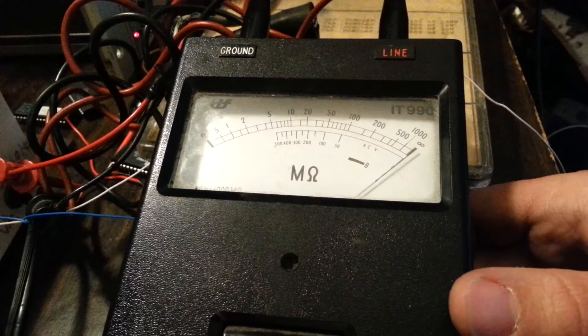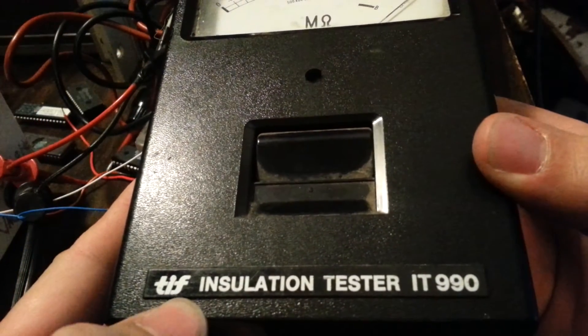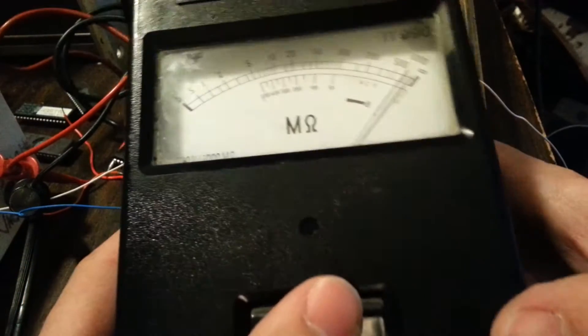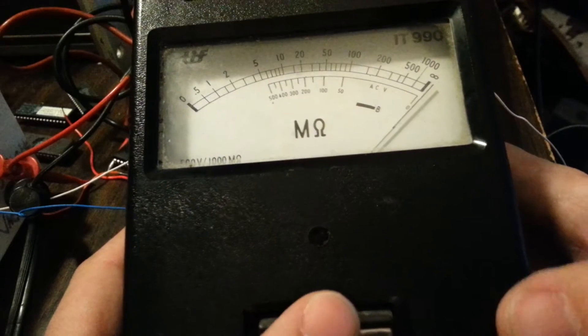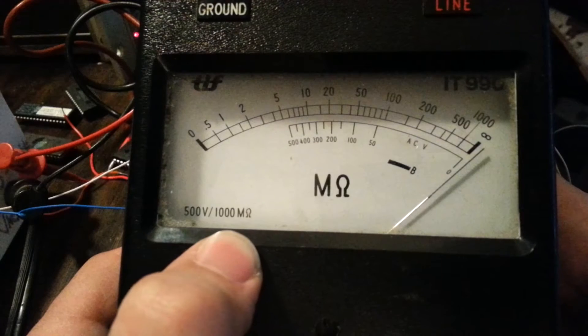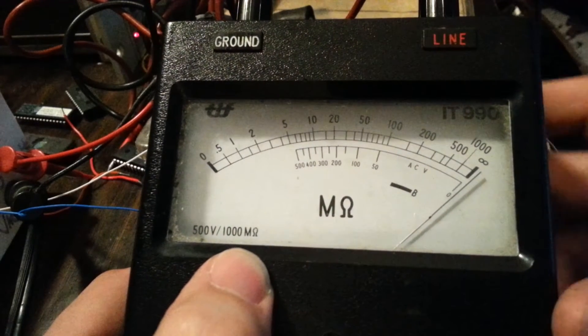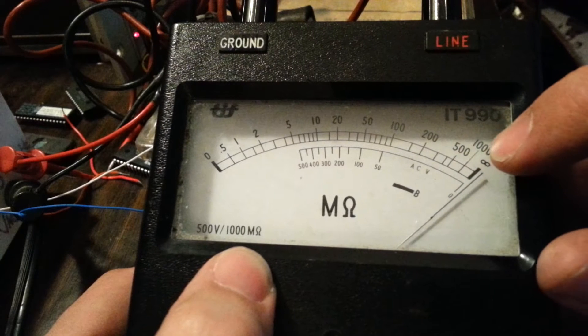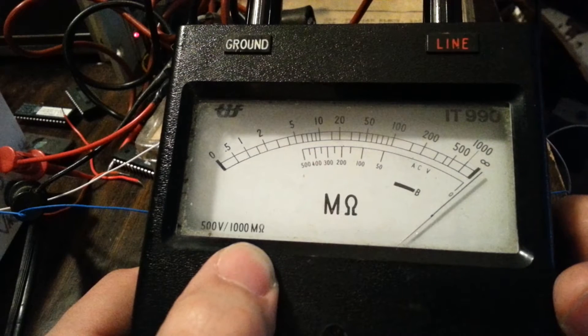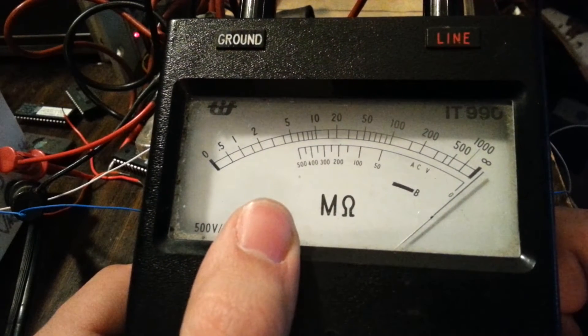So here's a little bit better look at this meter, the TIF installation tester IT-990. Here is the test button. Mega ohms, 500 volts per 1000 mega ohm. And this device is able to read up to 1000 mega ohms, or better yet, a gigaohm. And of course up to 500 volts AC.